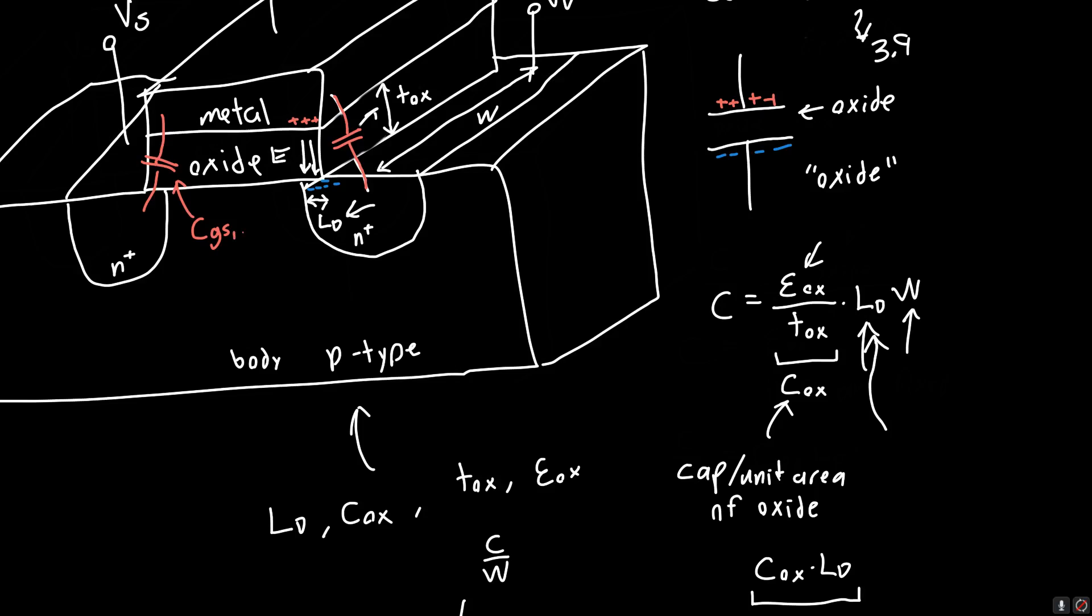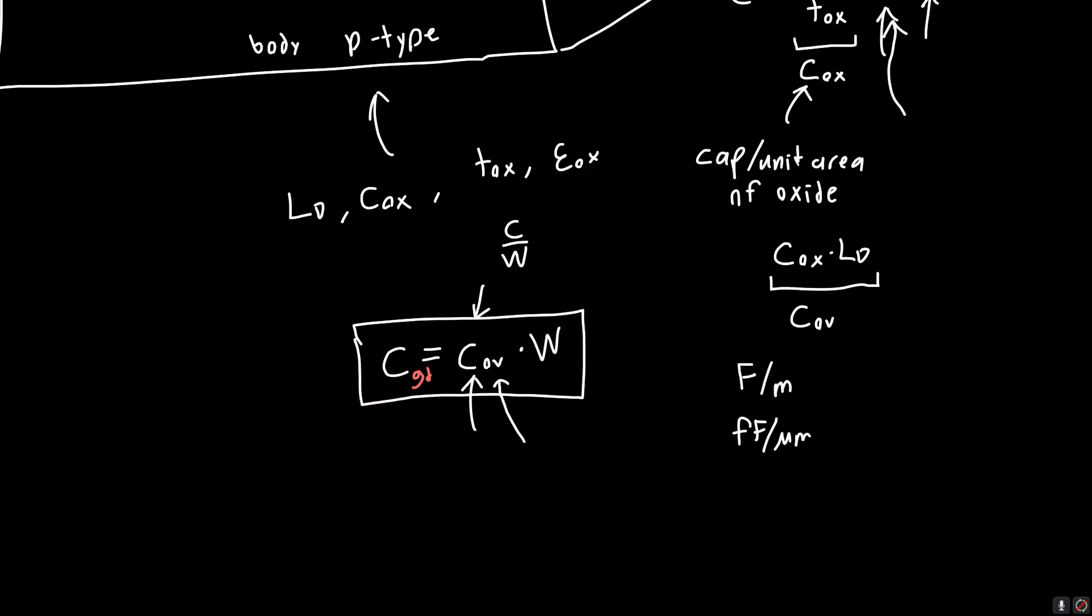And similarly, we've got a capacitor over here that's the same exact analysis involved. So this capacitor here we call CGS. And I'm going to call it CGS, I'm going to call these both CGS overlap and CGD overlap, because there's other components to CGS and CGD that we will see later. So both CGS overlap and CGD overlap are equal to this overlap capacitance per unit width multiplied by the width of the transistor.